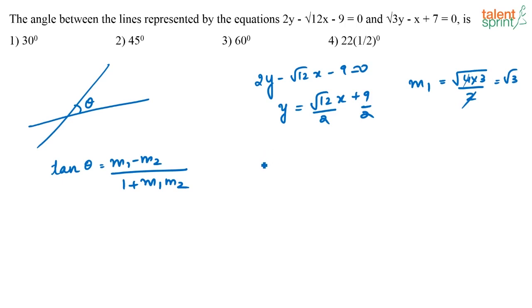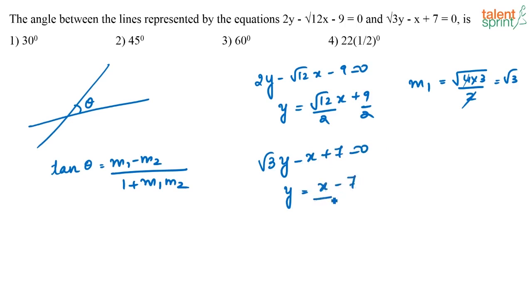The equation of the second line is root 3y minus x plus 7 equals 0, or y equals x minus 7 by root 3. The slope of the second line, m2, is 1 by root 3.